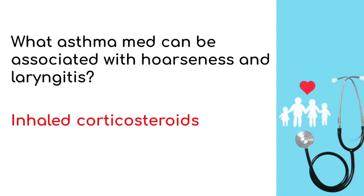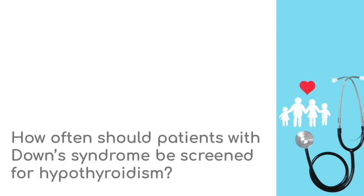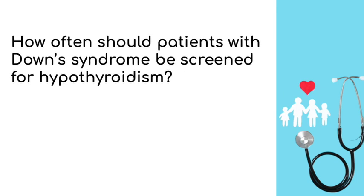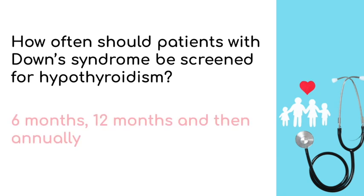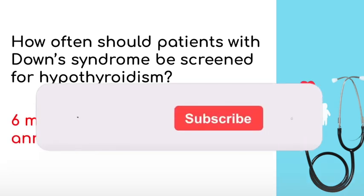How often should patients with Down syndrome be screened for hypothyroidism? At 6 months, 12 months, and then annually.